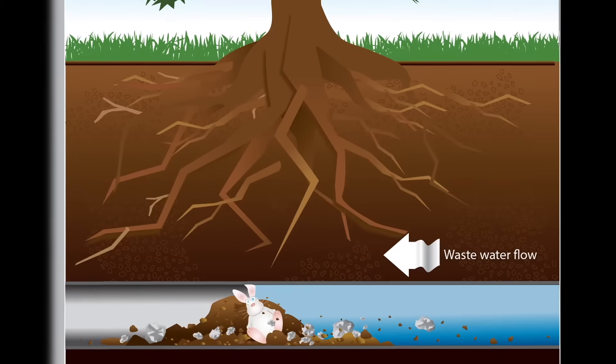A blockage in the line can occur from tree roots or other foreign objects, a misalignment in the pipe, a belly, or a partial collapse.